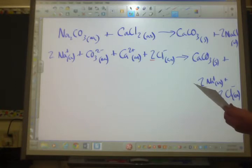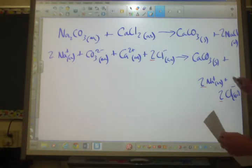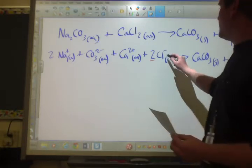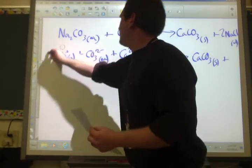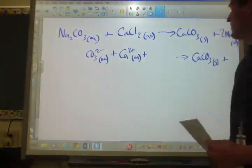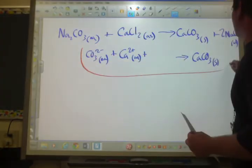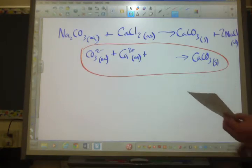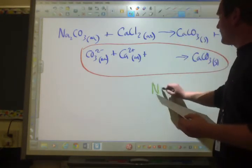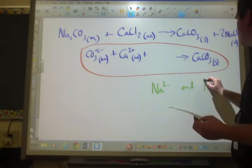Net ionic equation. Erase anything that's repeated. So we're left over with sodium and chloride. Get rid of this. Get rid of that. Get rid of that. Net ionic equation. Right here. Ca2+(aq) plus CO32-(aq) yields CaCO3(s). Identify the spectator ions. It's what we got rid of. Na+ and Cl-.